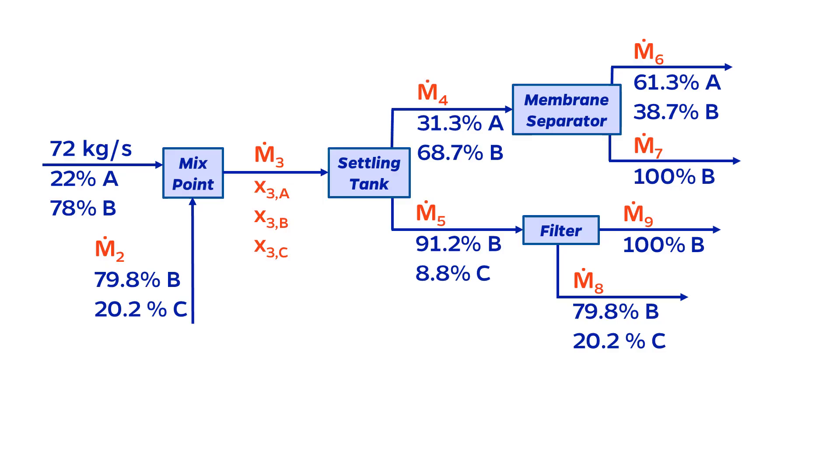So let's see an example. I've already taken care of translating the problem statement into a block flow diagram, but take a moment to pause the video now and study it. Imagine that you are tasked with finding values for all of the orange unknowns. It seems a little daunting at first, doesn't it?